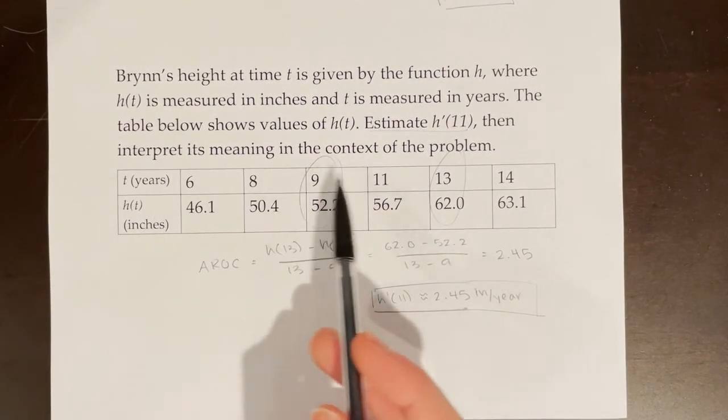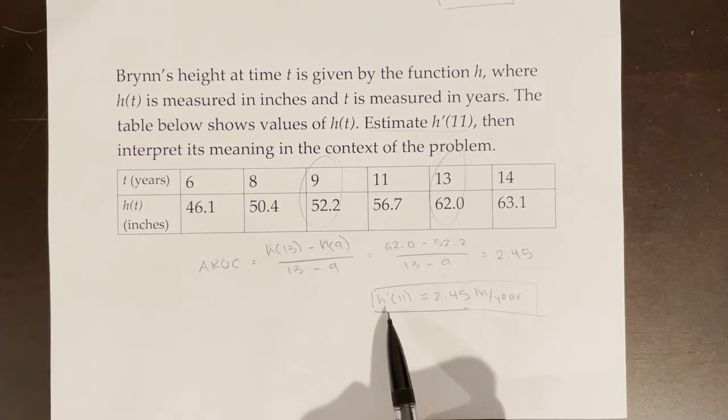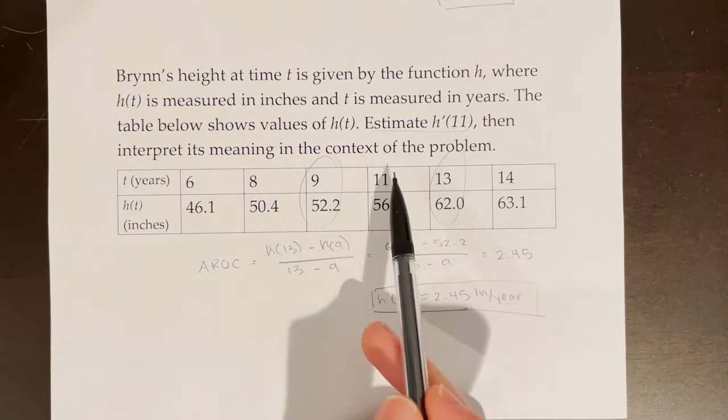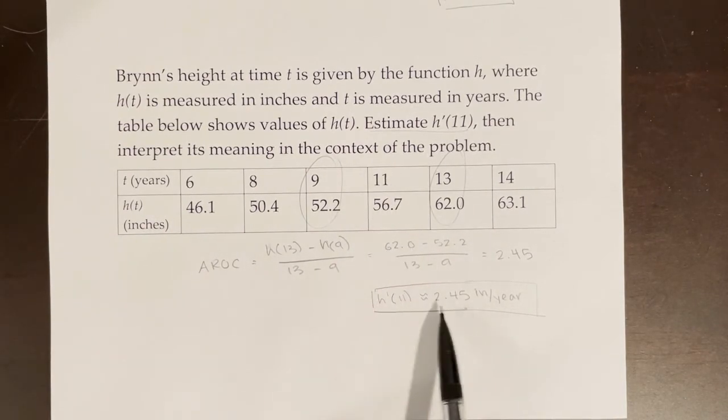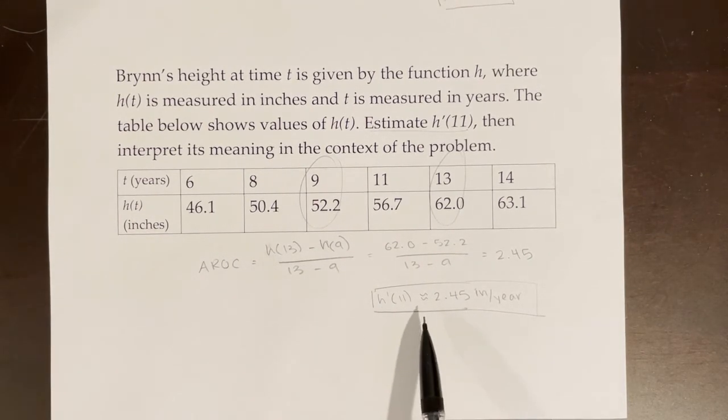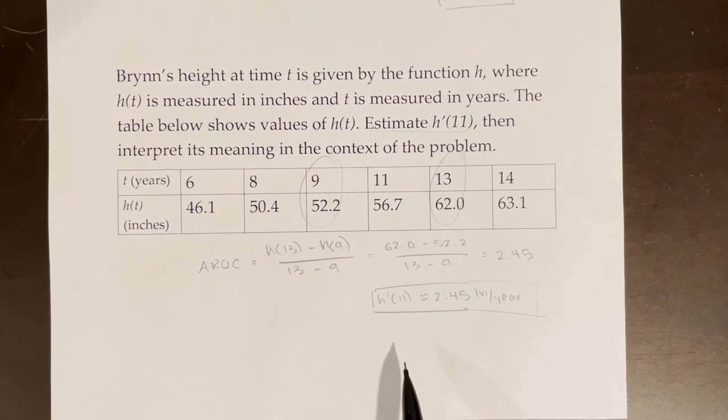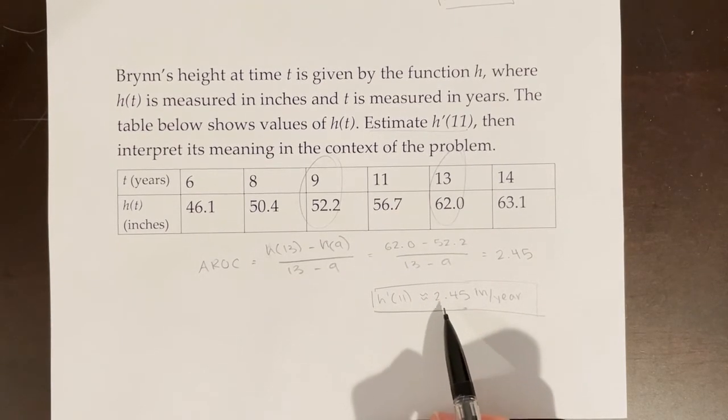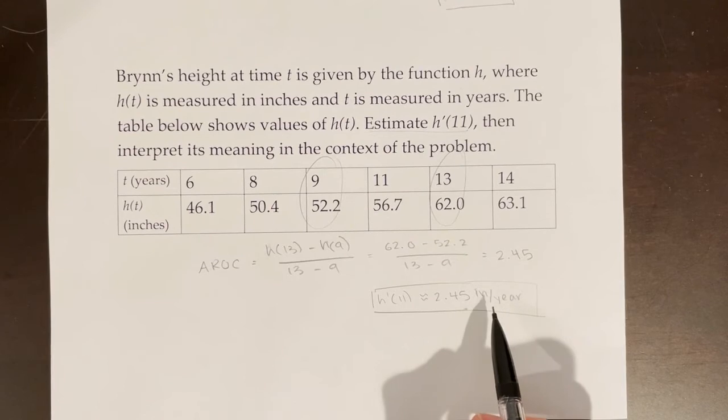And now that my problem has a unit, I need to interpret the meaning in the context of the problem. So when I say h prime of 11, that means the slope of the tangent line at 11, or the rate exactly at 11. This does not mean that when she was 11 years old, her height was 2.45 inches. Because we didn't find h of 11, we were finding h prime of 11, the rate of change. So how you would successfully interpret this meaning in the context of the problem would be to write that when she was 11 years old, her height was changing at a rate of 2.45 inches per year.